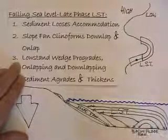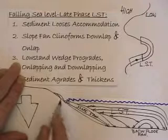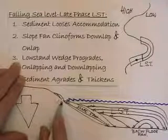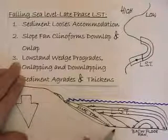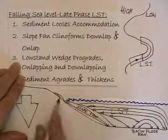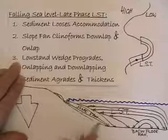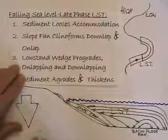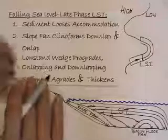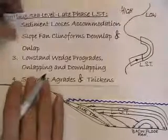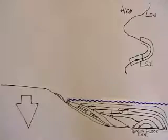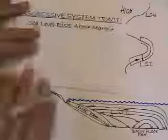And the margin, the basal margin of the low stand systems tract is represented by an unconformable relationship, which is created when sea level falls below the shelf margin and erodes it. And then the upper surface of this low stand systems tract will be marked by evidence of transgression. The transgressive systems tract then is...